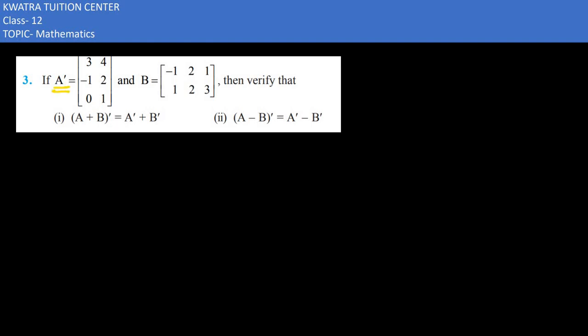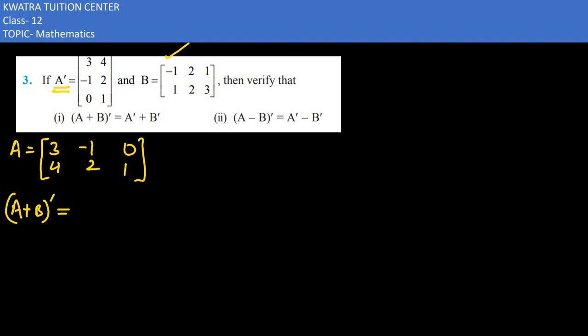In the third question we have A dash and B dash, and we need to find two verifications. First of all we have to make matrix A. Matrix A is: 3, minus 1, 0 in the first row and 4, 2, 1 in the second row.